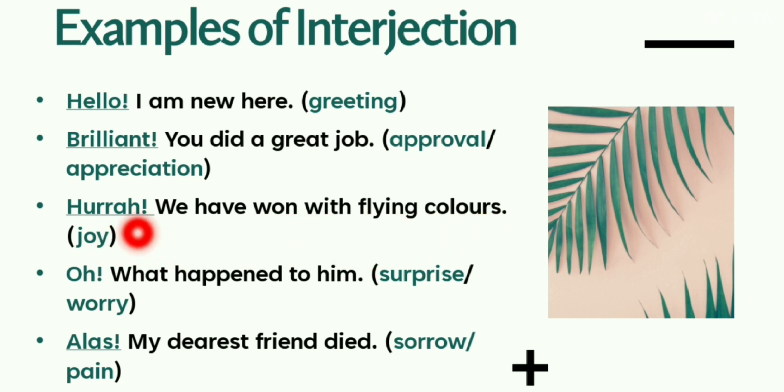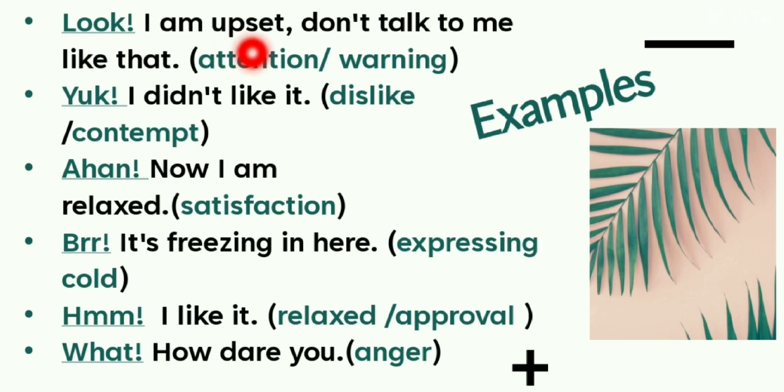Next one: Oh! What happened to him. This oh interjection over here in this sentence is showing surprise as well as worry. Next one: Alas! My dearest friend died. This alas interjection is showing sorrow as well as pain. Some more examples: Look! I am upset, don't talk to me like that. So look interjection over here is showing attention and warning as well.